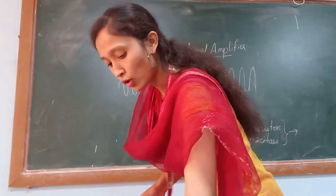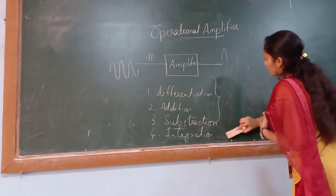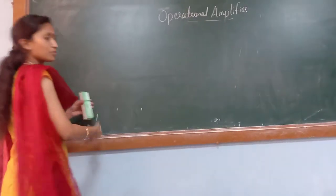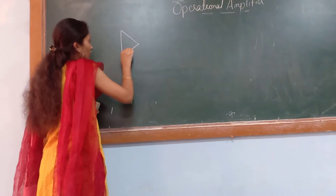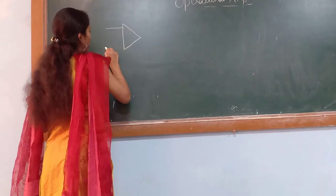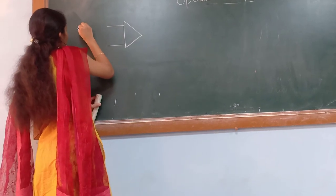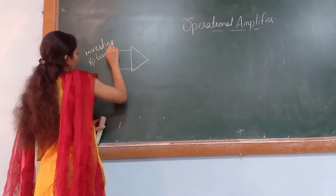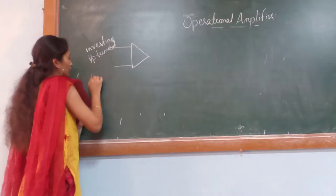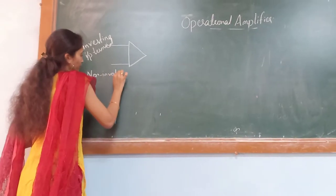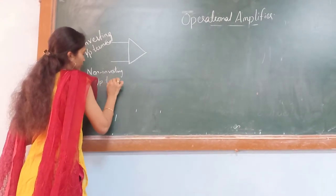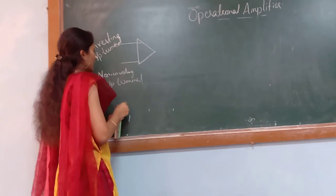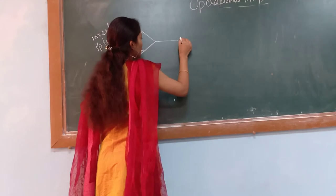Let us see the schematic symbol of an operational amplifier. The operational amplifier has two input terminals and one output terminal. One is the inverting input terminal and the other is the non-inverting input terminal. The inverting input terminal is marked with a negative sign and the non-inverting input terminal is marked with a positive sign, and the third terminal is the output terminal.